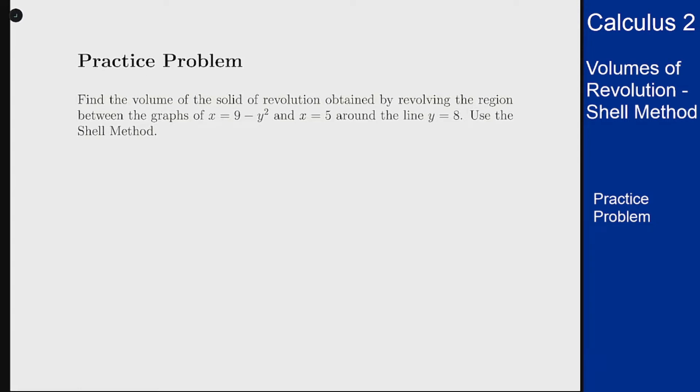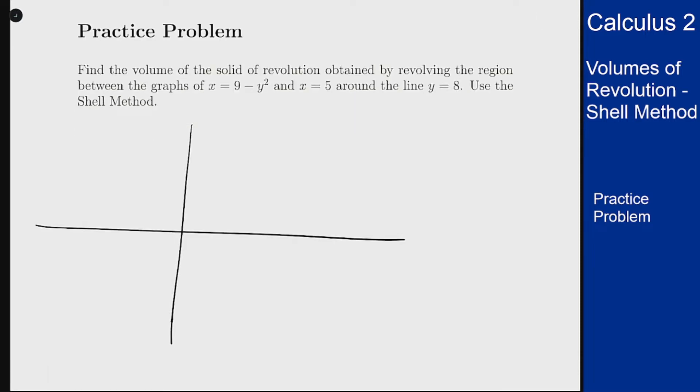So let's first have a picture here for what this region looks like. x equals 9 minus y squared, so it's going to be a parabola and the parabola is going to face to the left. How do we know that? Well if we look at x equals 0, I'm describing this to be 0 here, then y is going to be plus or minus 3.